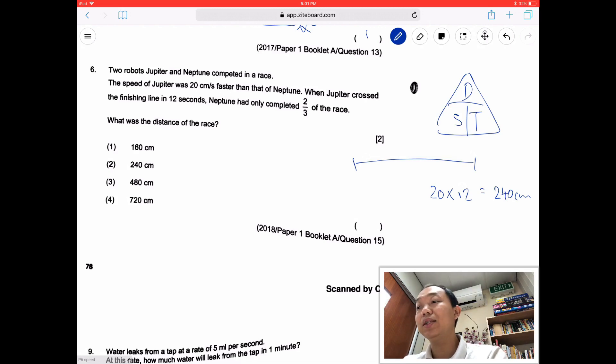Using the DST triangle, we have Jupiter's speed. Jupiter is 20 cm per second faster than Neptune. That means in 12 seconds, take 20 times 12, that will give you 240 cm. In 12 seconds, he will travel 240 cm more. So what this means is, when Jupiter is here, Neptune is here, and the distance is 240 cm apart because it's 20 cm faster.